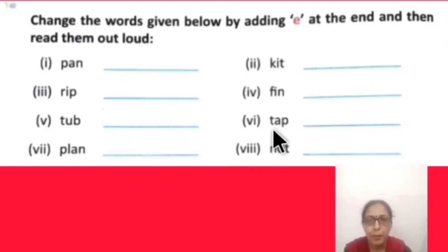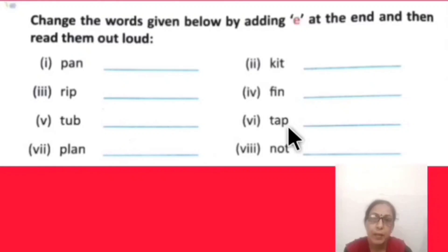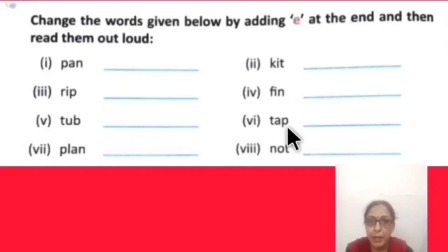Next word: T-A-P, 'tap' — which you know. When E is added at the end, the word becomes 'tape.' Tape — what you use to join things together, like when a page in your book tears and you stick it back with tape.